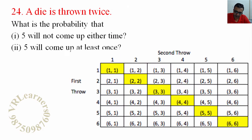Now we'll do question number 24. Question number 24 says that a die is thrown twice. A die could be thrown once or a dice could be thrown, both are acceptable.